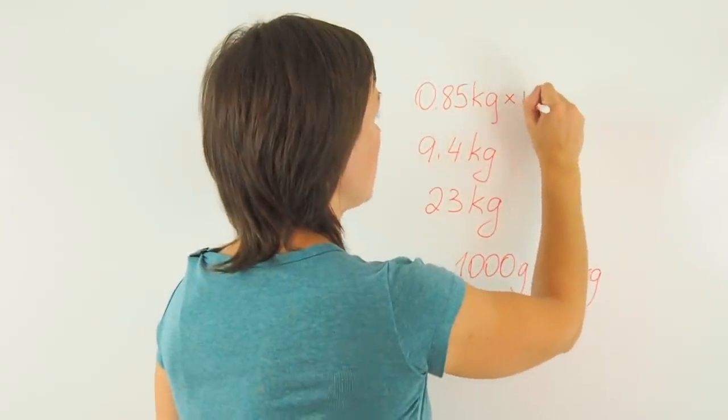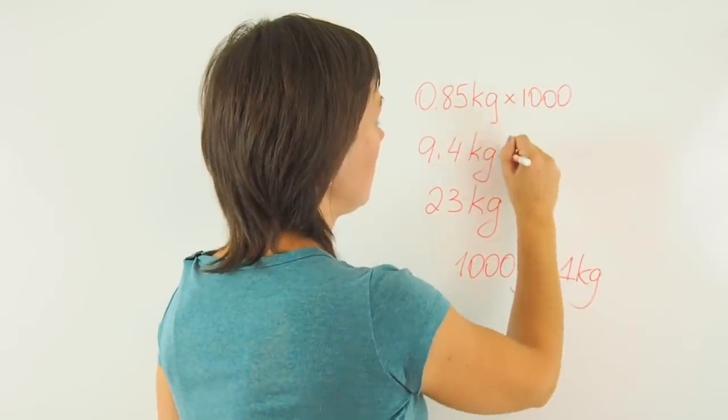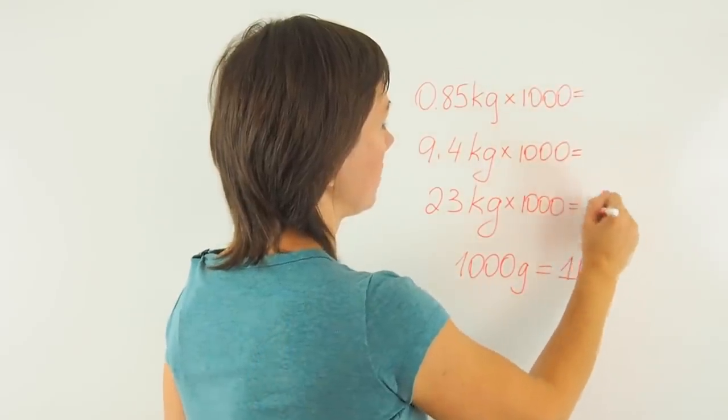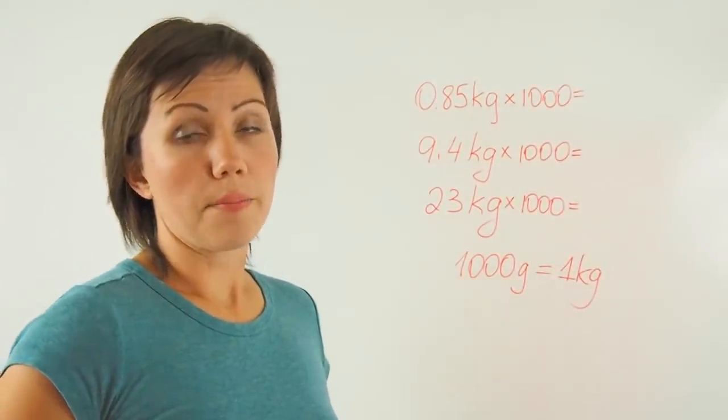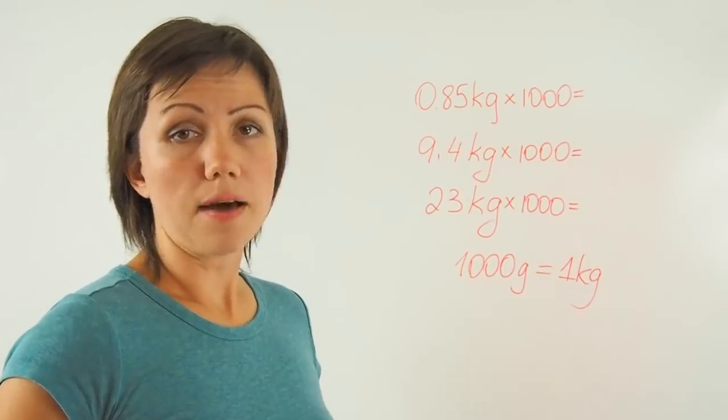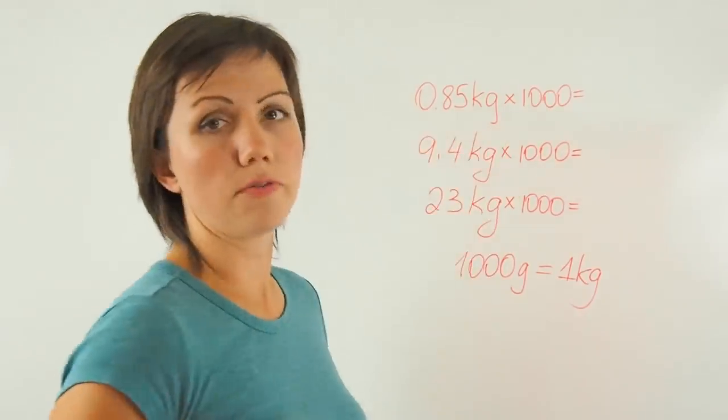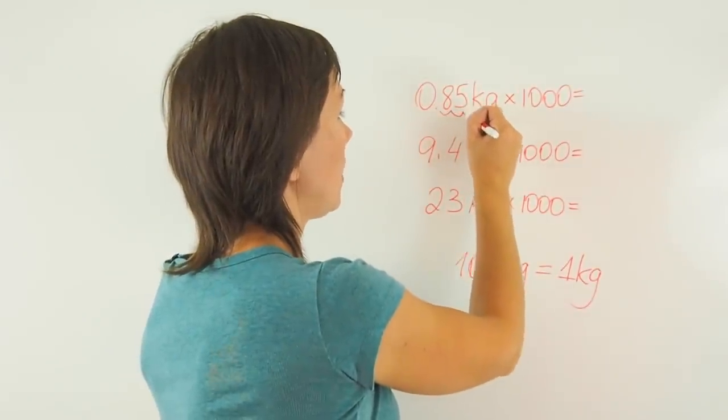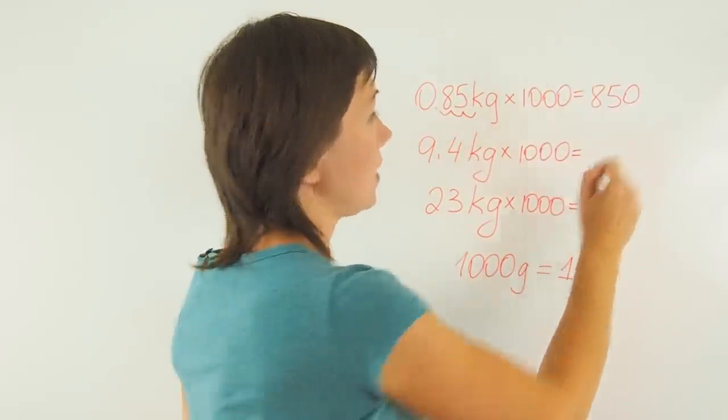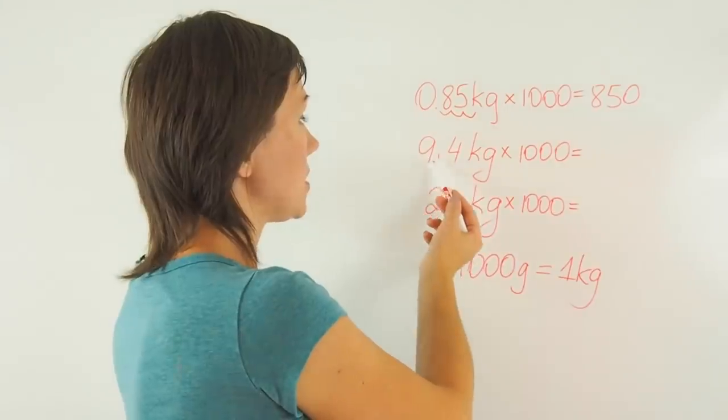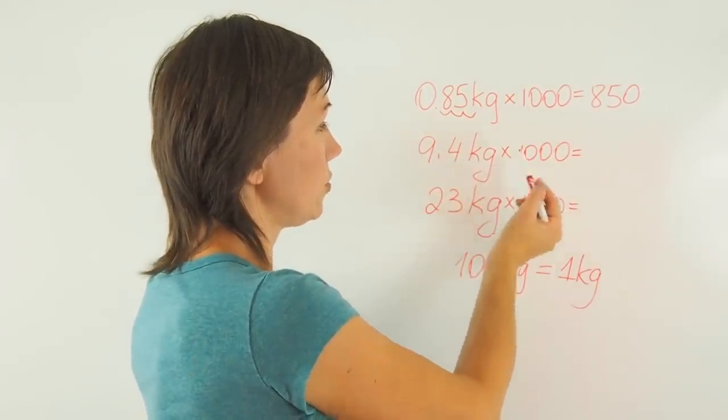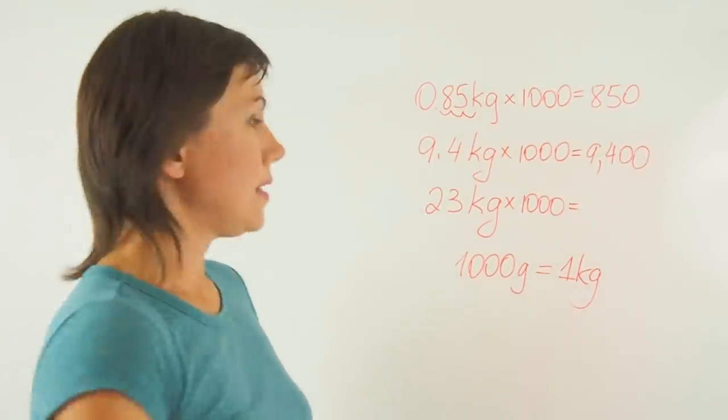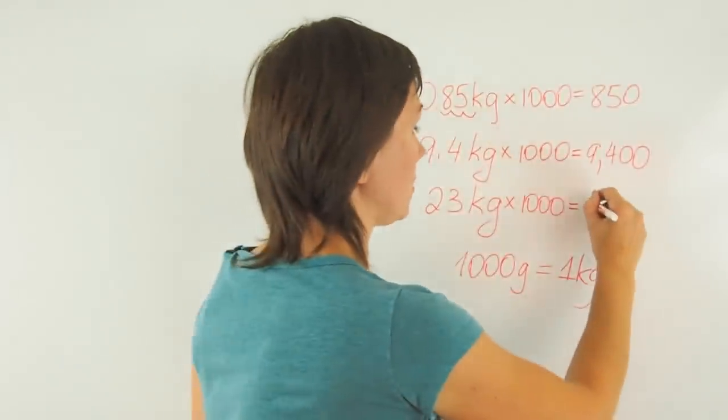So I will multiply this number by 1,000, this by 1,000, and this by 1,000. All I need to do when I multiply decimals by 1,000 is to move a decimal point to the right three places. So 1, 2, and 1 more, which gives me 850. Then I multiply this one, 1 and 2 more, 9,400. And then 23 times 1,000 is 23,000.